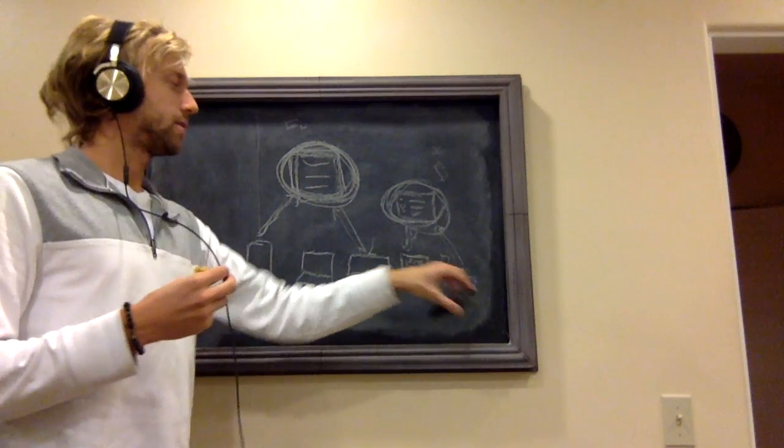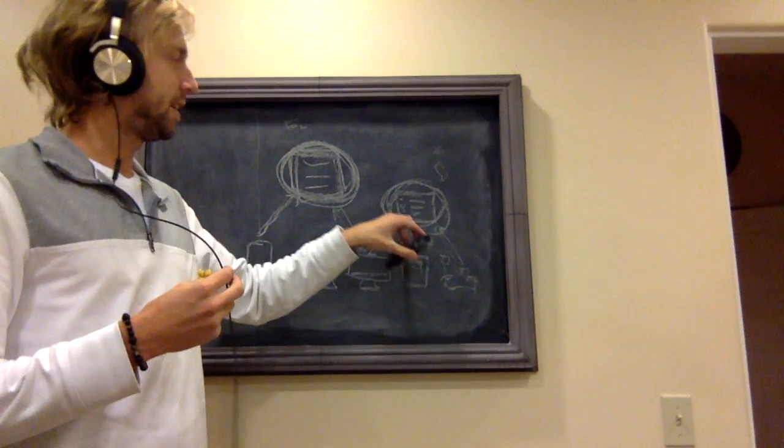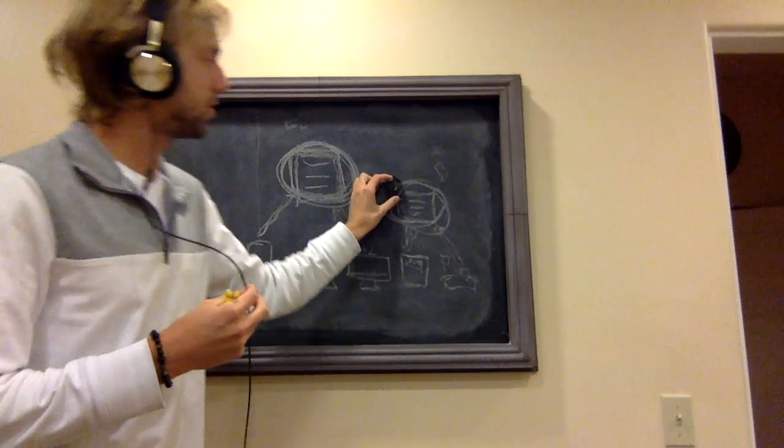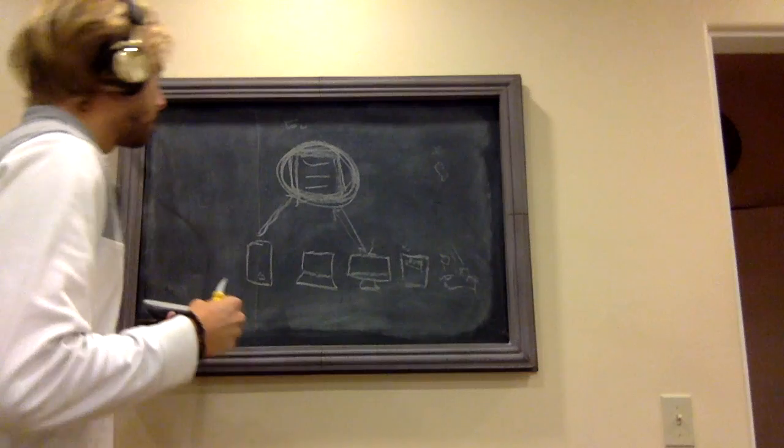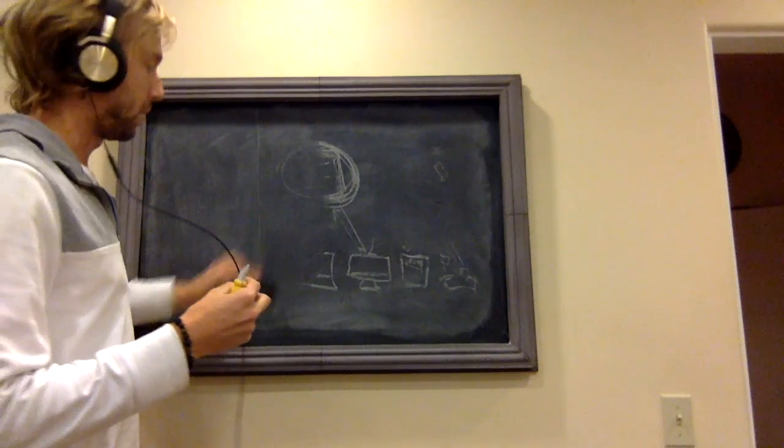What if we designed a currency that didn't need this middleman? What if we could just get rid of this person? And that's exactly what they did. So they invented something called Bitcoin.